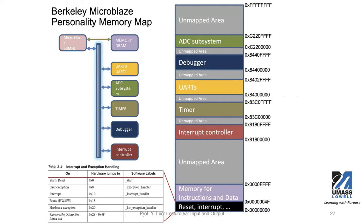This is an example of the Berkeley MicroBlaze, showing the memory map. We have a 32-bit address, so it's a very large range. Some areas are unmapped, and some are real memory. On the very top is the interrupt and exception handling table. These addresses — 0, 8, 10, 18, 20, and others — are hardware-specific addresses. When this microcontroller gets a reset, the first instruction it will execute is found at address 0.